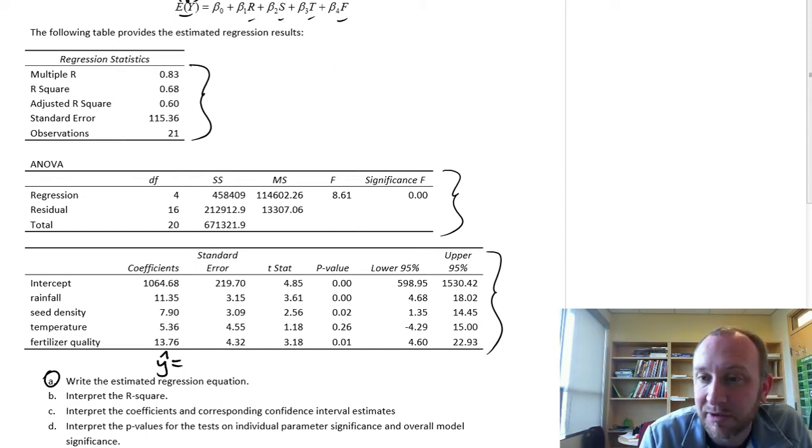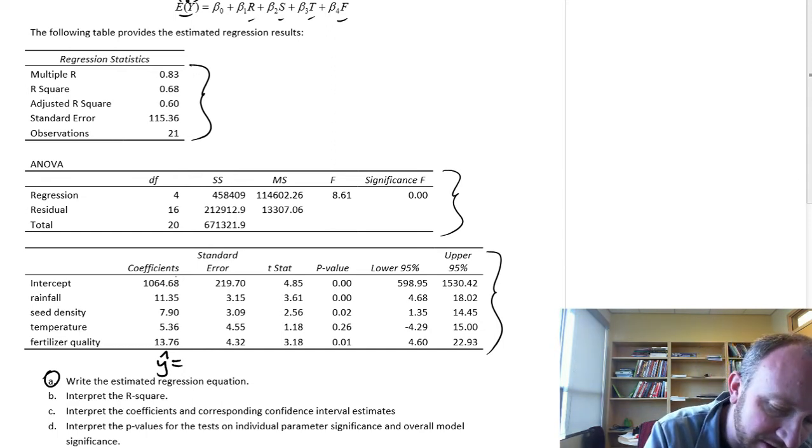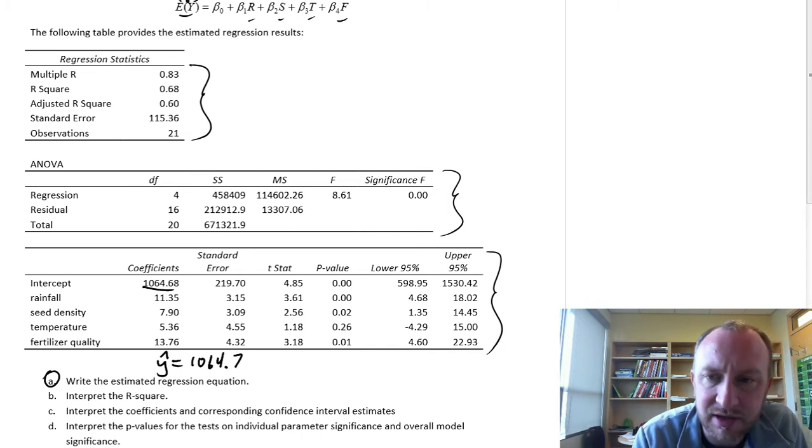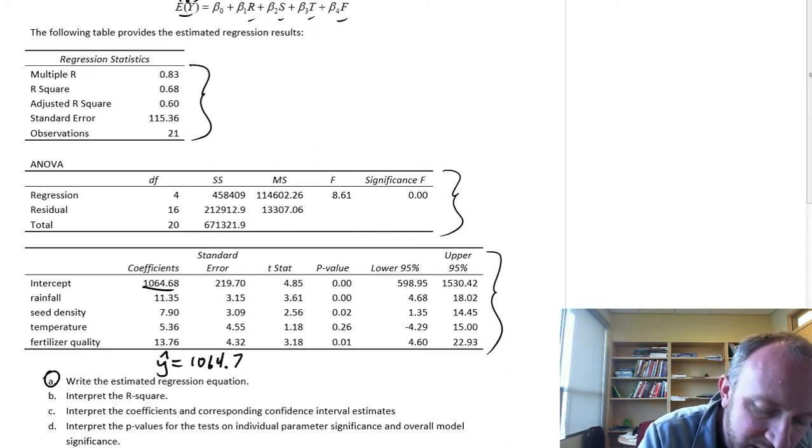Our estimate of the y intercept is right here, so this is 1064.7, plus our estimate on rainfall, 11.35 R,